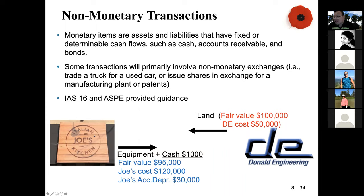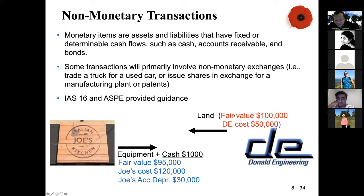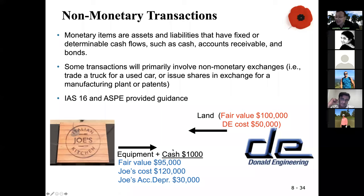To illustrate, suppose Joe's Kitchen is getting a piece of land from Donald Engineering. Joe gave equipment and $1,000 cash to Donald, and Donald in exchange gave a land to Joe. This is a non-monetary transaction because equipment is involved — it's not just purely cash here.